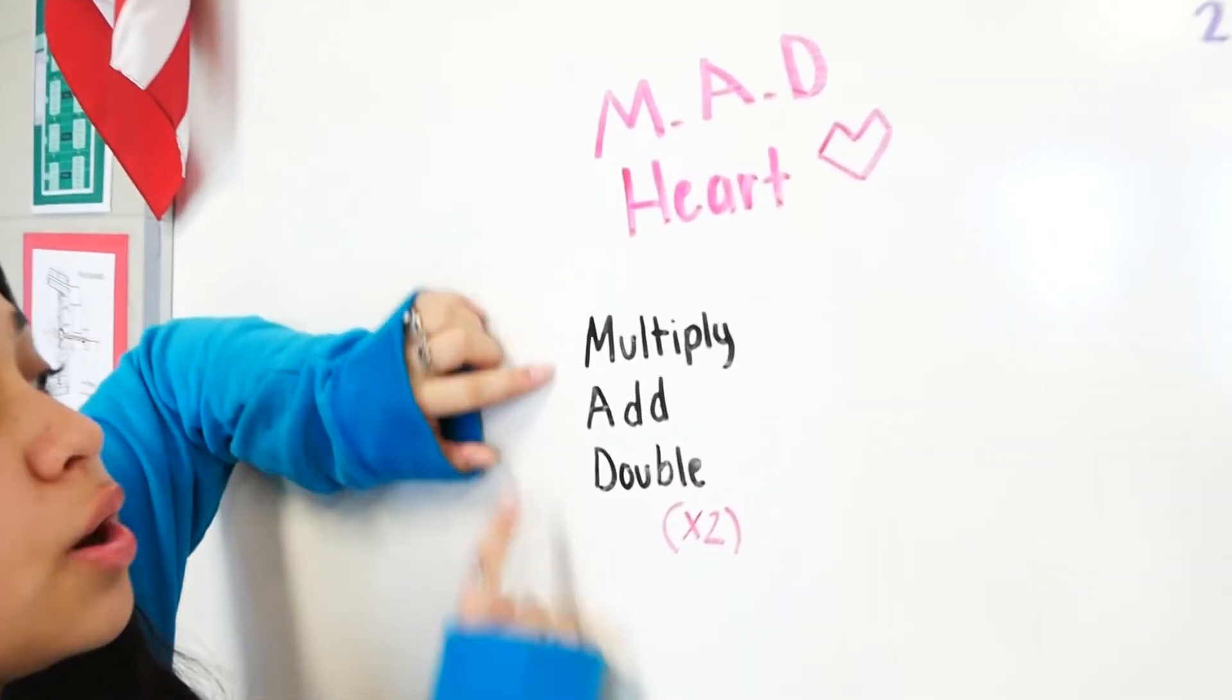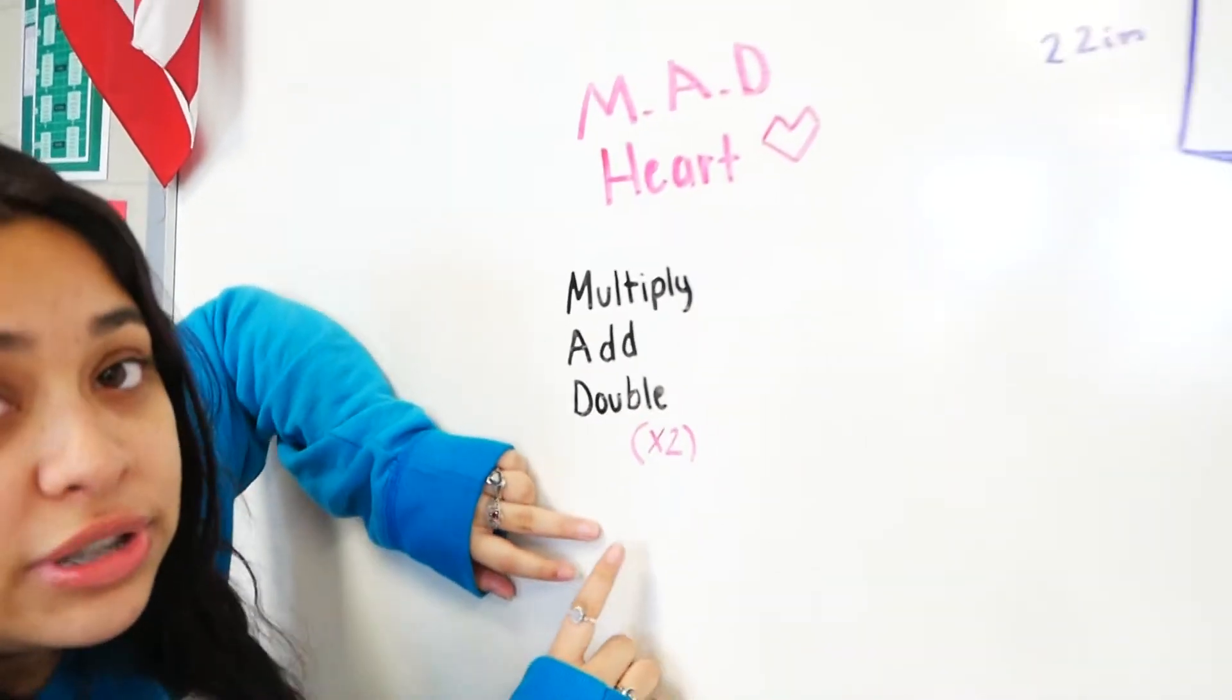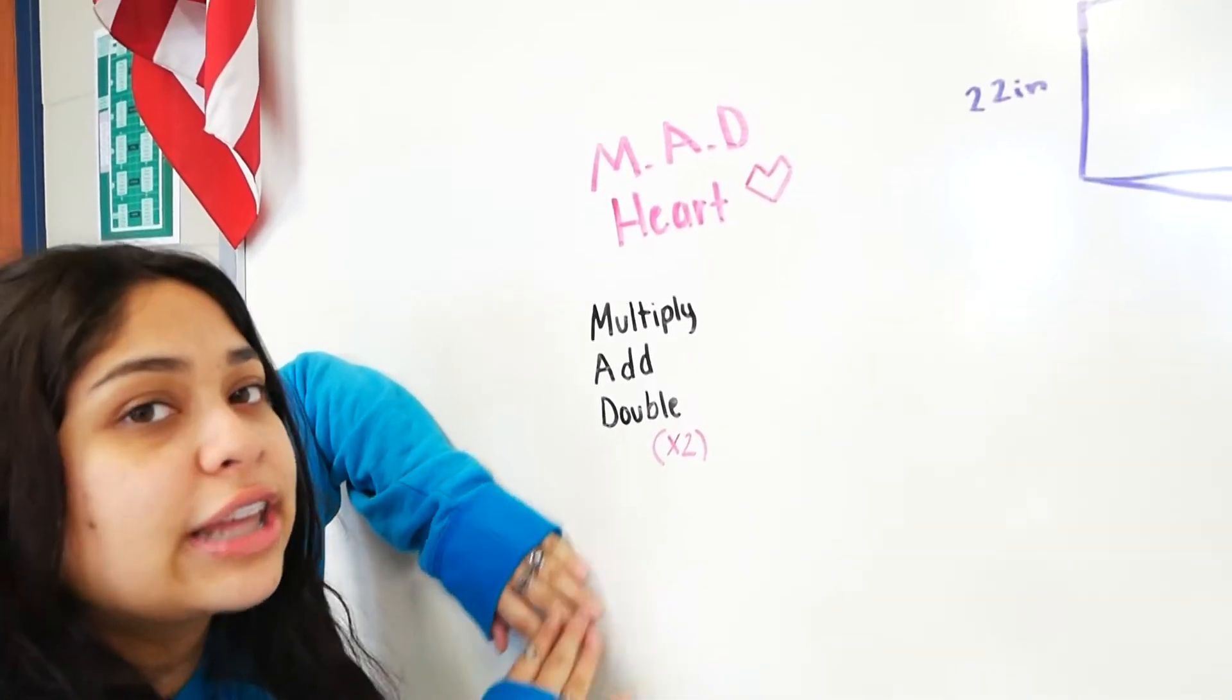MAD stands for multiply, add, and double. Double also means times two which is very important later on in the method.